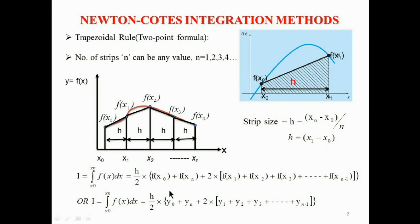The trapezoidal rule can also be written in terms of y. If we set y = f(x), then y0 = f(x0), yn = f(xn), y1 = f(x1), and so on. So the trapezoidal rule can be rewritten in the form of y accordingly.